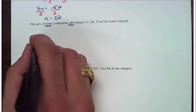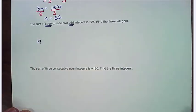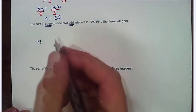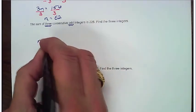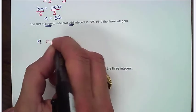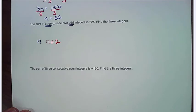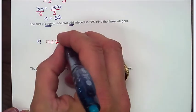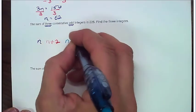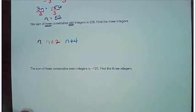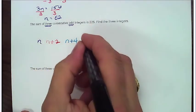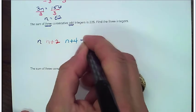So remember, we start with our n. That's where we start any sequence. And then we do n plus 2. And then we jump from there to n plus 4. Now that gives me 1, 2, 3 integers. And the sum of those integers is 225. So that's 225.